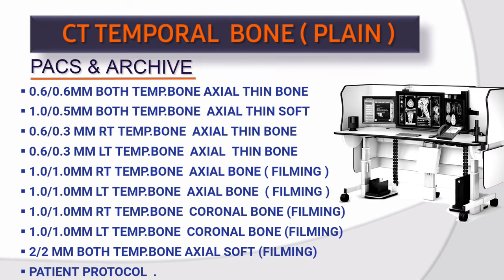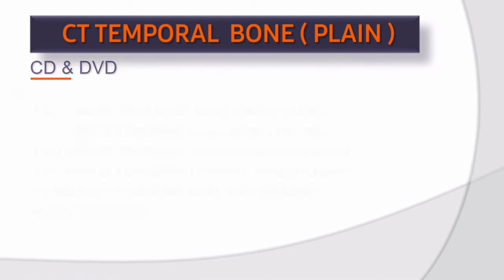Data for PACS and archive system: 0.6×0.6 mm both temporal bone axial thin bone; 1.0×0.5 mm both temporal bone axial thin soft; 0.6×0.3 mm right temporal bone axial thin bone; 0.6×0.3 mm left temporal bone axial thin bone; 1.0×1.0 mm right temporal bone axial bone for filming; 1.0×1.0 mm left temporal bone axial bone for filming; 1.0×1.0 mm right temporal bone coronal bone for filming; 1.0×1.0 mm left temporal bone coronal bone for filming; 2×2 mm both temporal bone axial soft for filming; and patient protocol.